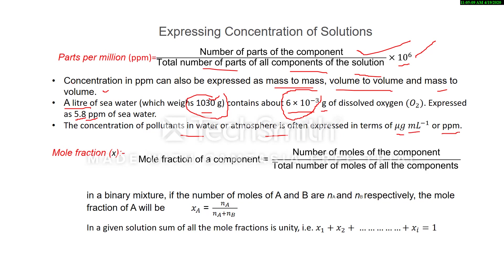Next is mole fraction, represented by x. Mole fraction of a component equals number of moles of that component divided by total number of moles of all components. For a binary mixture of components A and B, where nA and nB are their moles: mole fraction of A, xA = nA / (nA + nB). In any given solution, the sum of all mole fractions is unity: x₁ + x₂ + ... = 1.